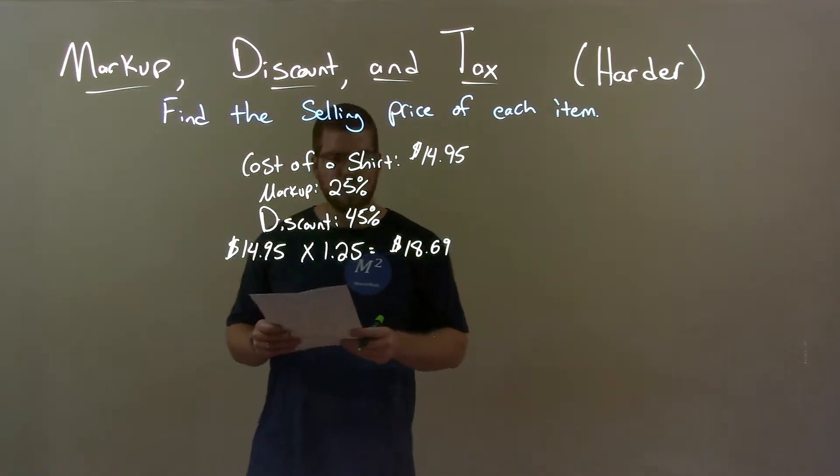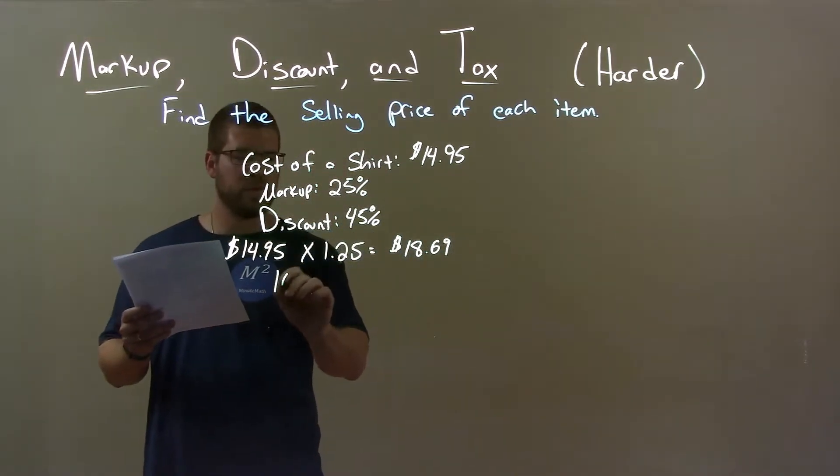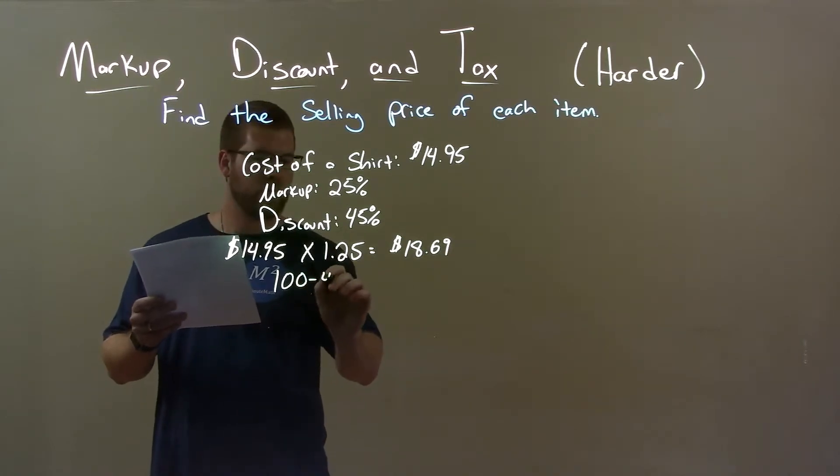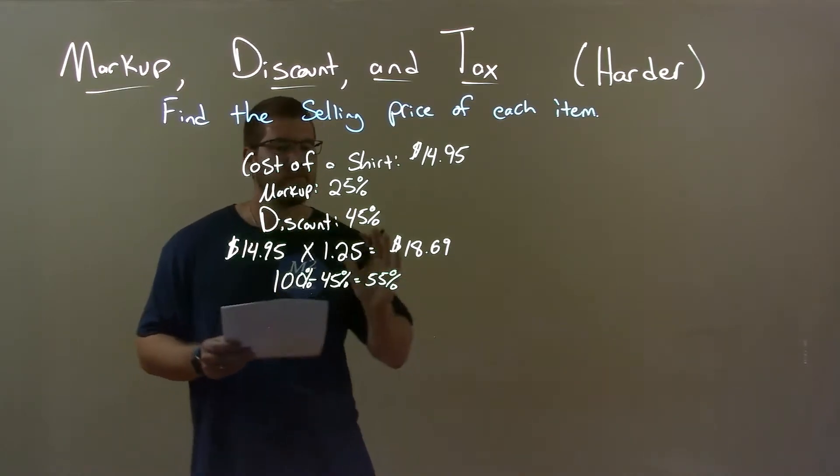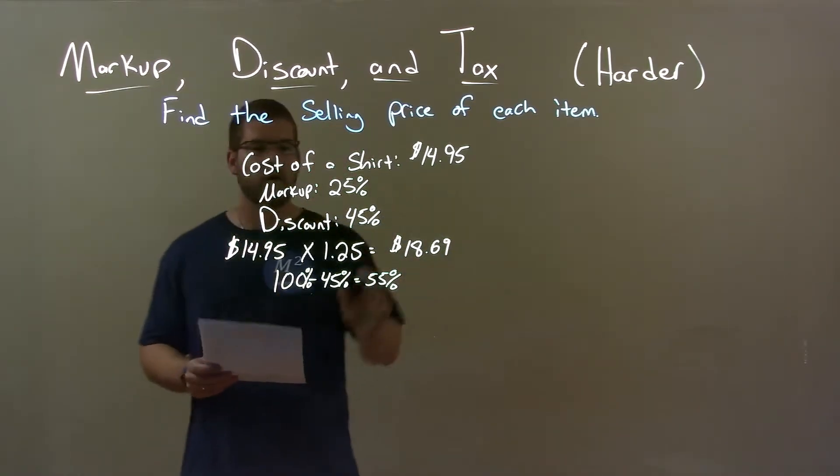Now, a 45% discount means we'll only pay 100% minus 45%, which gives us 55%. That means we're going to pay 55% of that final price, or that price right there that we found.